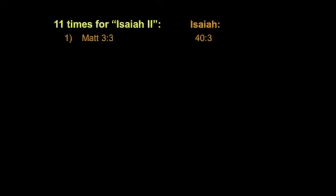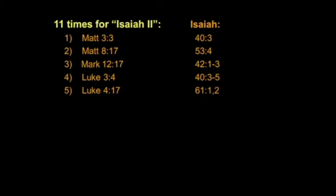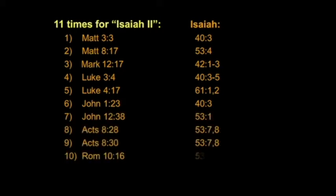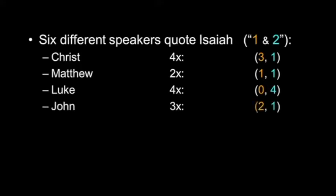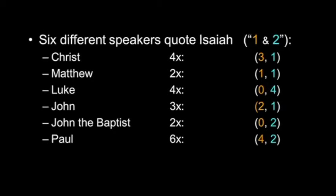From the second Isaiah, there are 11 citations: Matthew quoting chapter 40, Mark quoting chapter 42, Luke quoting chapter 40, Luke chapter 4 quoting Isaiah 61 — Christ's mandate in Nazareth, John 1 quoting Isaiah 43 for the introduction of John the Baptist, and so on. The point is, your New Testament interchanges its quotes from part 1 and part 2. There is no division — it's the same guy. Six different speakers quote Isaiah, bridging the so-called two parts. Christ quotes three times from Isaiah 1 and once from Isaiah 2. Matthew quotes from each side. Luke quotes four times from Isaiah 2. John quotes three times.